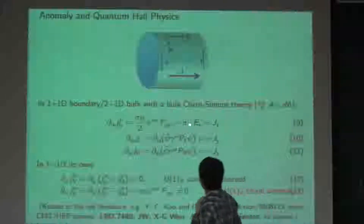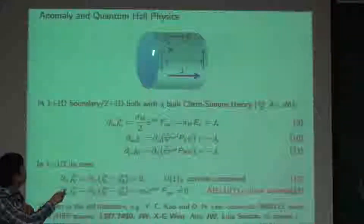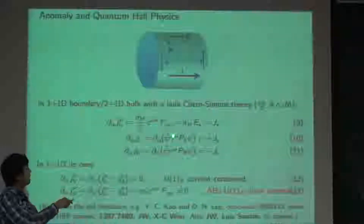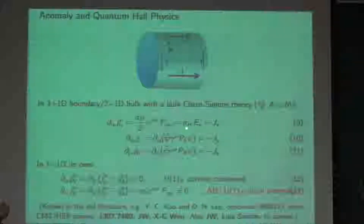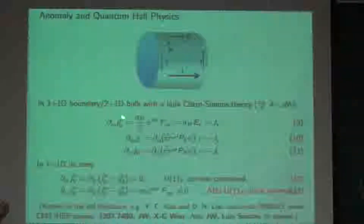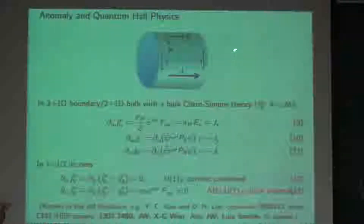Not just looking at bulk current — if you look at the boundary side, you find the divergence of the edge current flow is exactly equal to how the external E field is applied. The total current is conserved: the edge current missing on the boundary must flow to the bulk. The partial derivative of the boundary current j equals the bulk current j_y, so total current in the entire system is conserved.